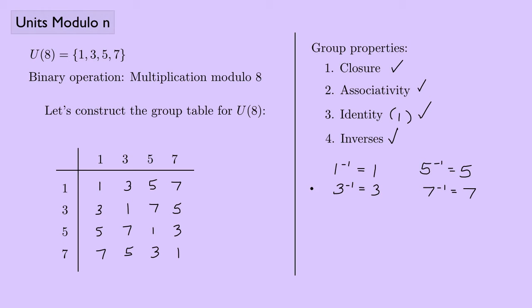It does appear that we have a group. In fact, we can say that U(8) is an abelian group, meaning it satisfies the commutative property for multiplication. Looking at the group table, we can also tell it's abelian because it is symmetric about the main diagonal.